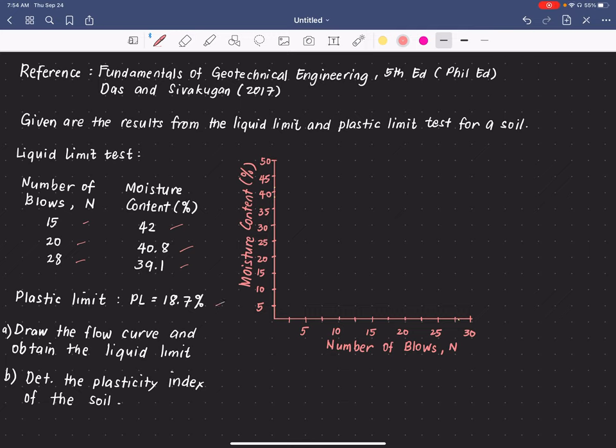So from these results we are asked to draw the flow curve and obtain the liquid limit as well as the plasticity index or PI. All we have to do is to plot the result of the liquid limit test showing the relationship of N and the moisture content. So let us begin.